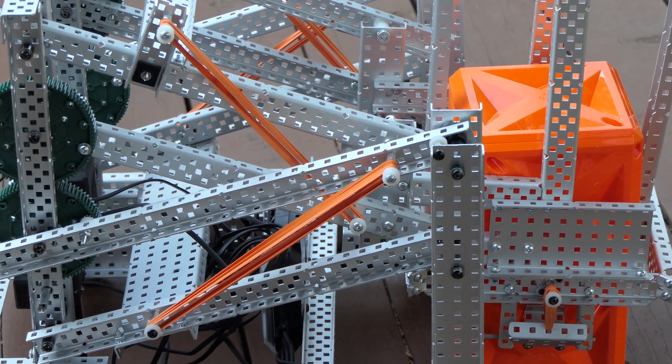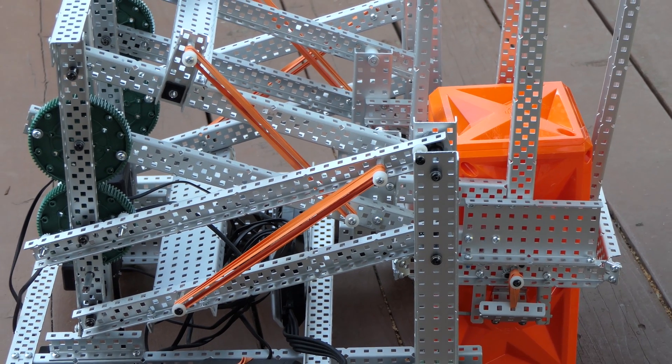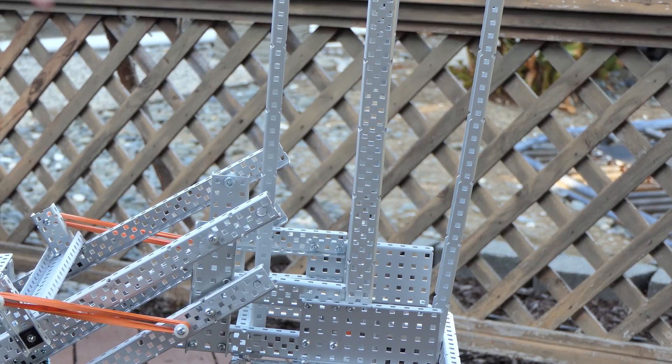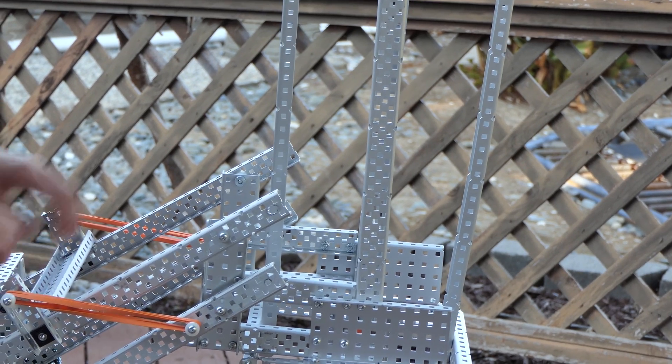That allowed us to pick the number of cubes we wanted, which was five, and lift the reverse floor bar to max height. So our intake passively picks up cubes like this.